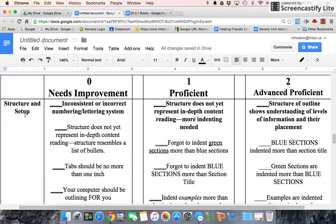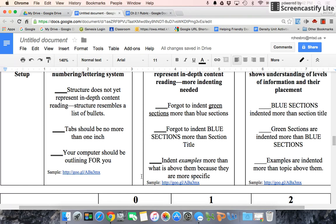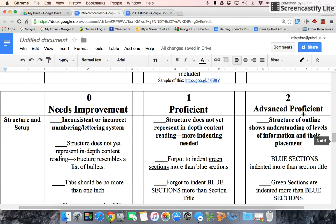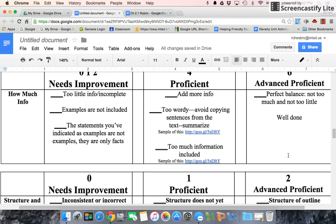The second category is the structure and the setup of the outline. You'll notice that there are some samples here. If you want to click on these samples, it'll show you what a zero is, what a one is, and what a two is. Those samples might really help you.